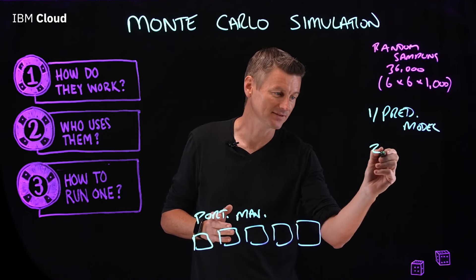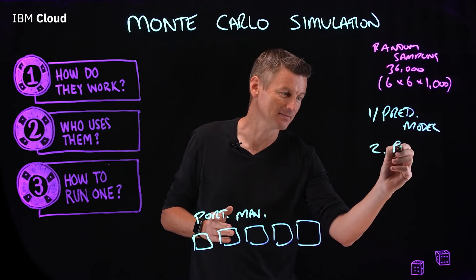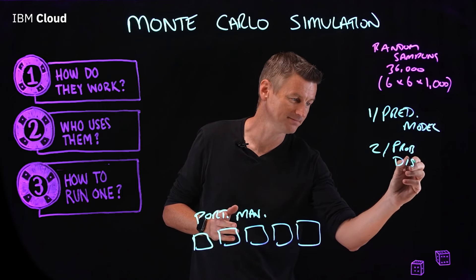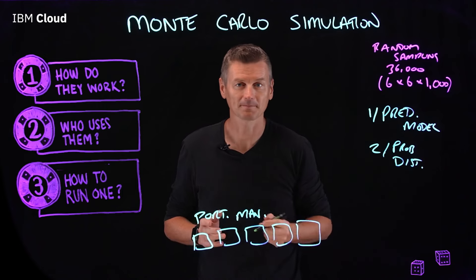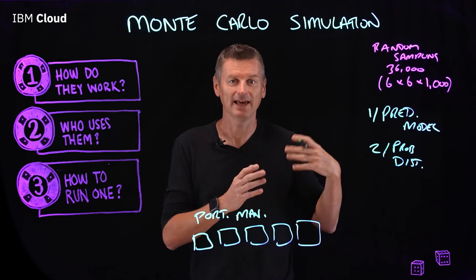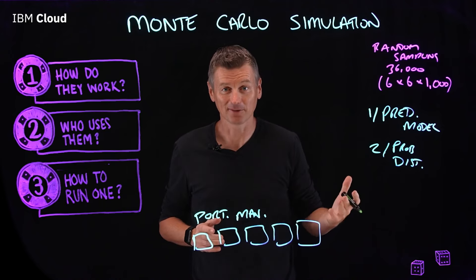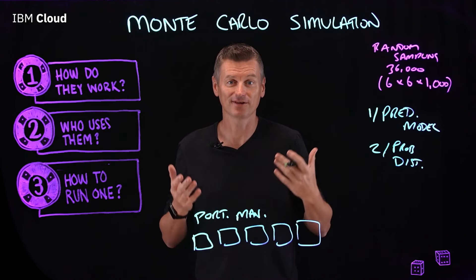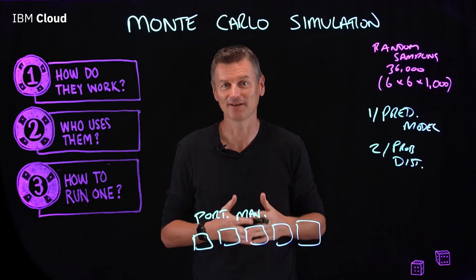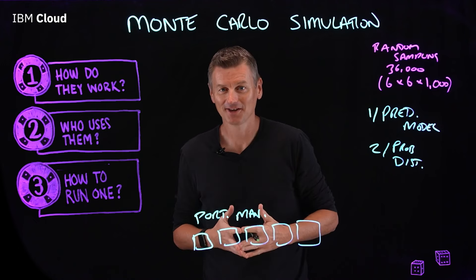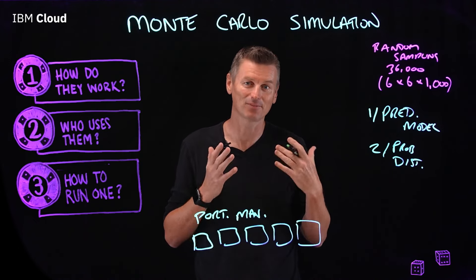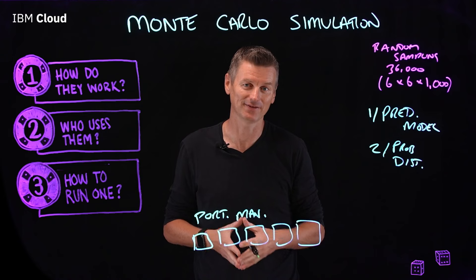Secondly, you specify the probability distribution of the independent variables. You can use historical data or an analyst's subjective judgment to define a range of likely values and assign probability weights for each.